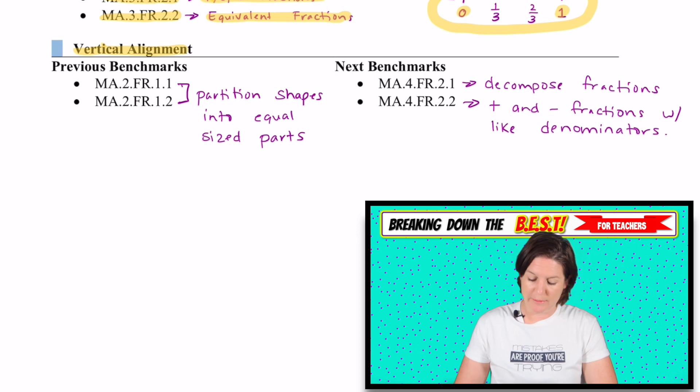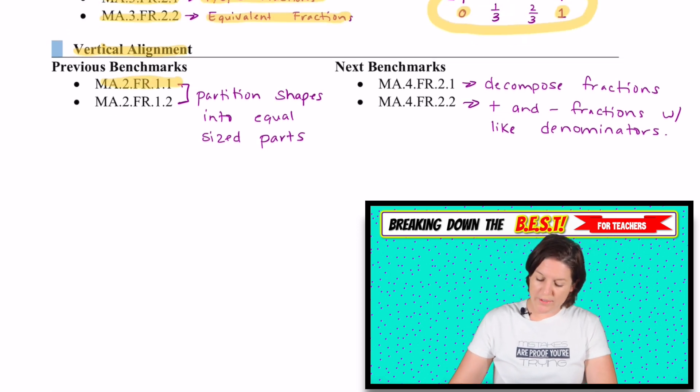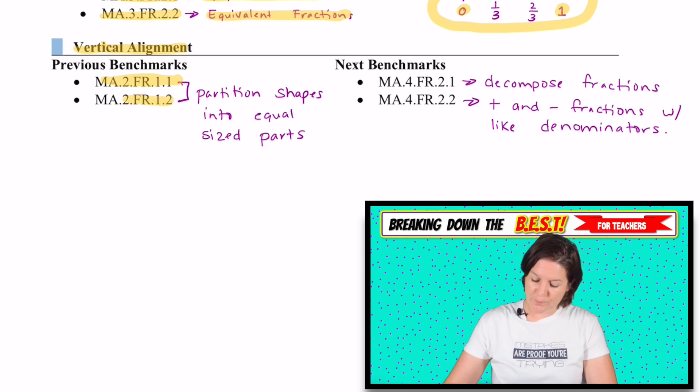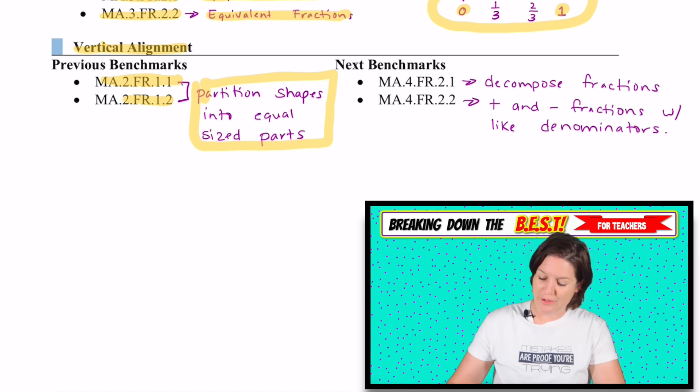Where are they coming from? Let's pay attention to our vertical alignment because in second grade, MA.2.FR.1.1 and 1.2, we practice partitioning shapes into equal size parts. I believe the focus was on circles and rectangles and stuff like that. Hopefully they are coming to you with that. But if not, you can always go down to that second grade standard if you need that vertical alignment.